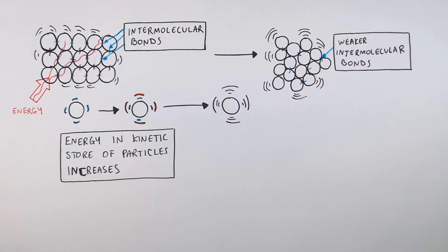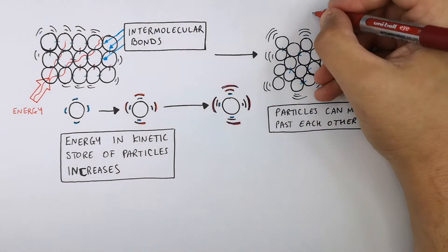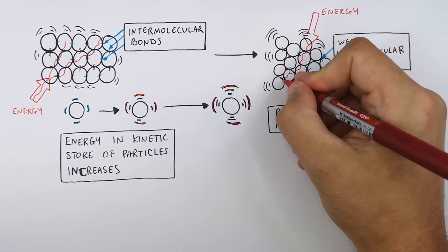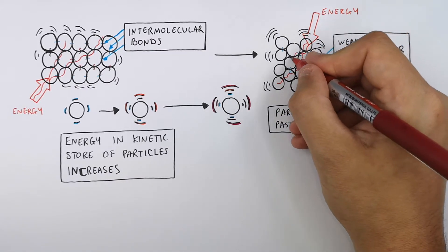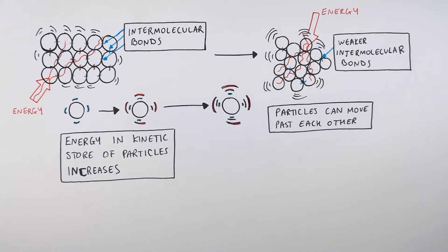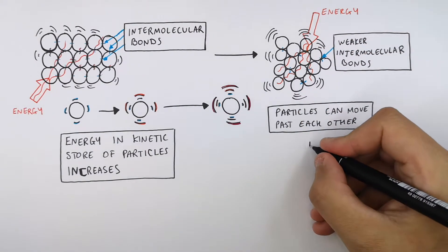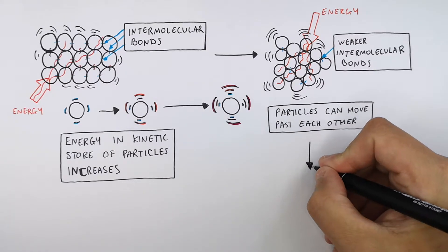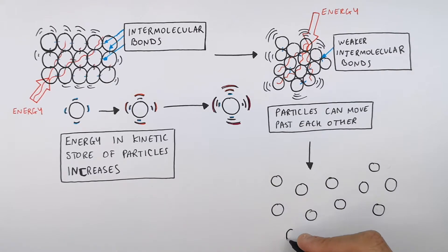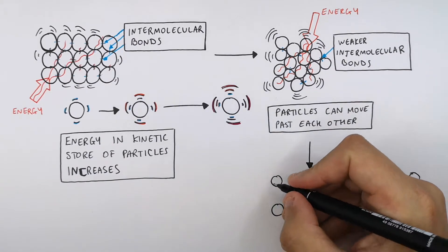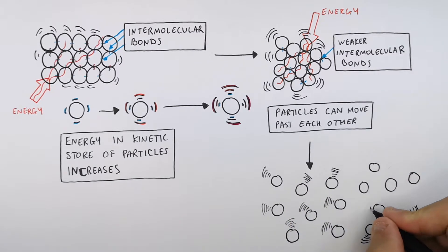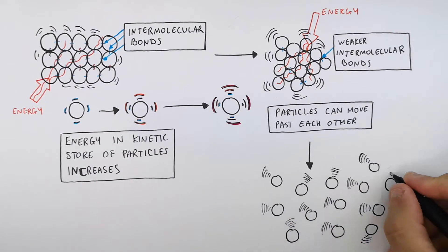So now we're transferring more energy into the thermal energy store of the object, therefore the particles will have more energy in their kinetic energy stores. The particles now have enough kinetic energy to weaken the intermolecular forces of attraction, therefore breaking the intermolecular bonds between the particles in the liquid. So now you've got a change of state whereby the liquid has now evaporated into a gas.